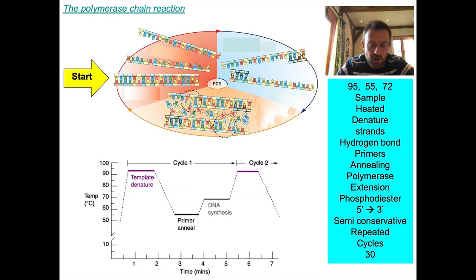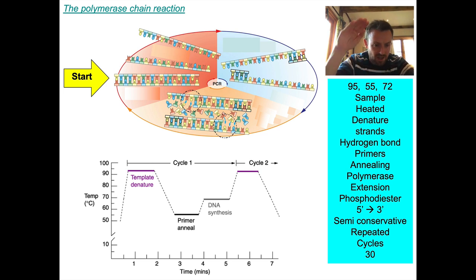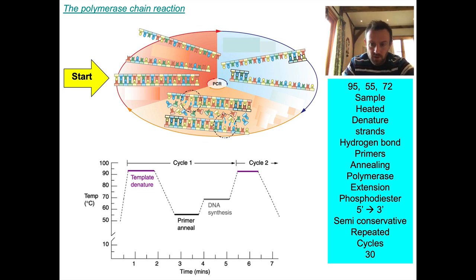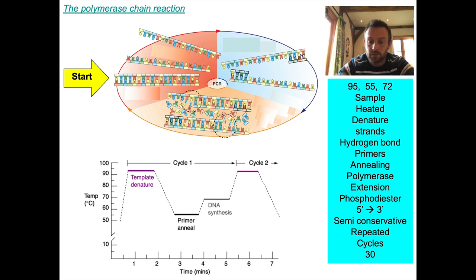Here is an actual graph taken from the internet of a thermocycler temperature cycle. We go up to 95°C to denature, down to 55°C for the primer to anneal, then up to about 70–72°C for DNA synthesis, and then back again.